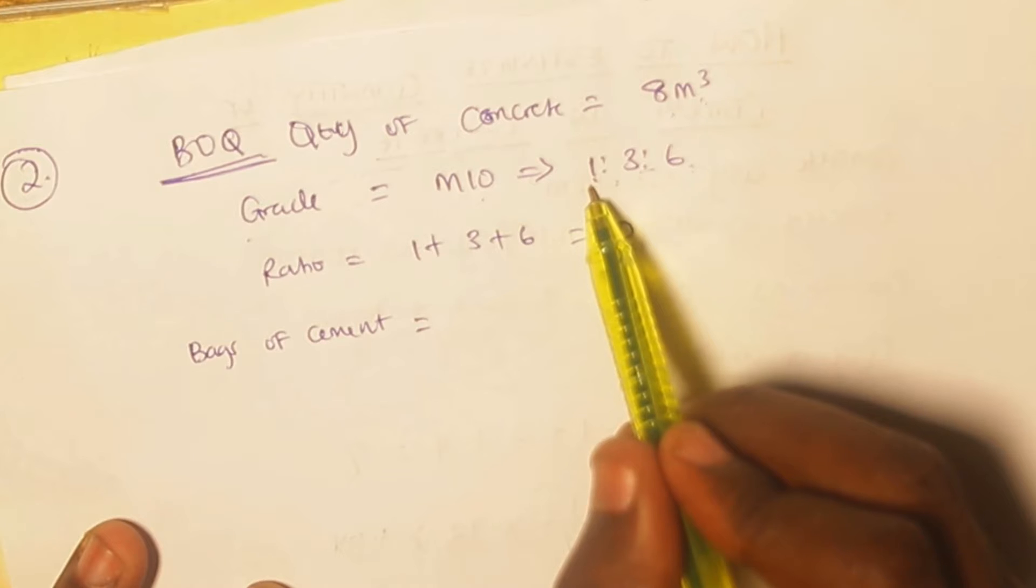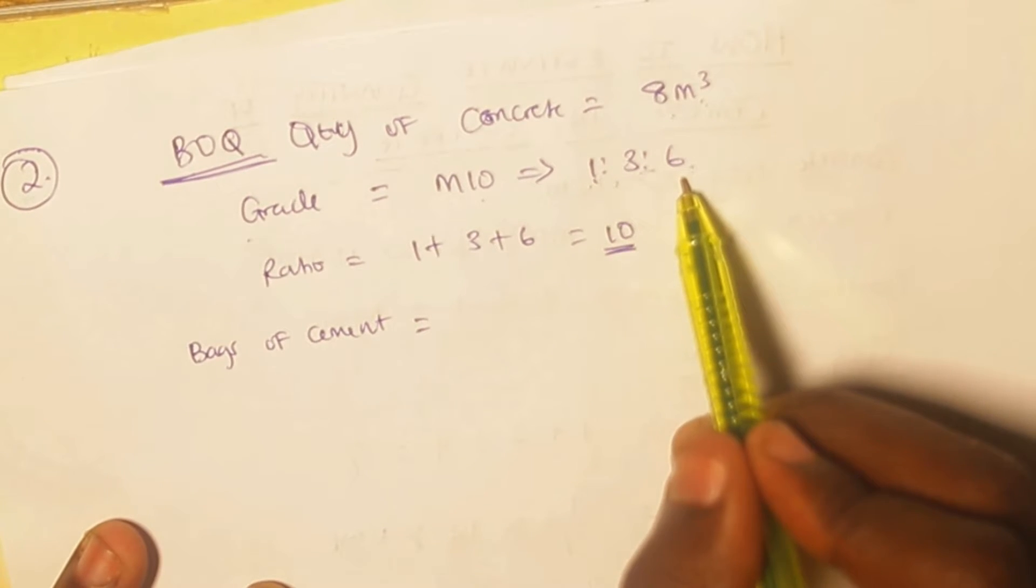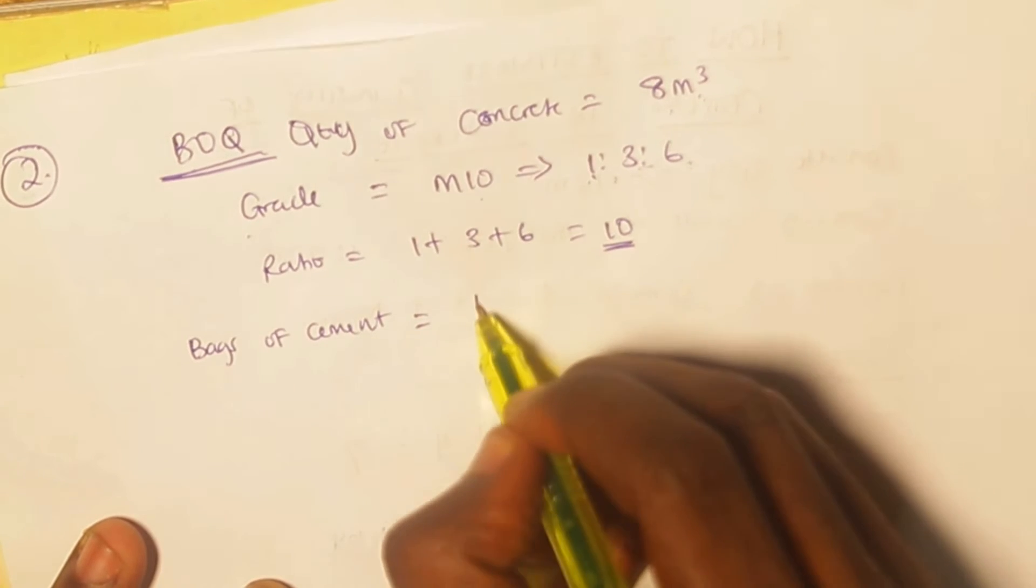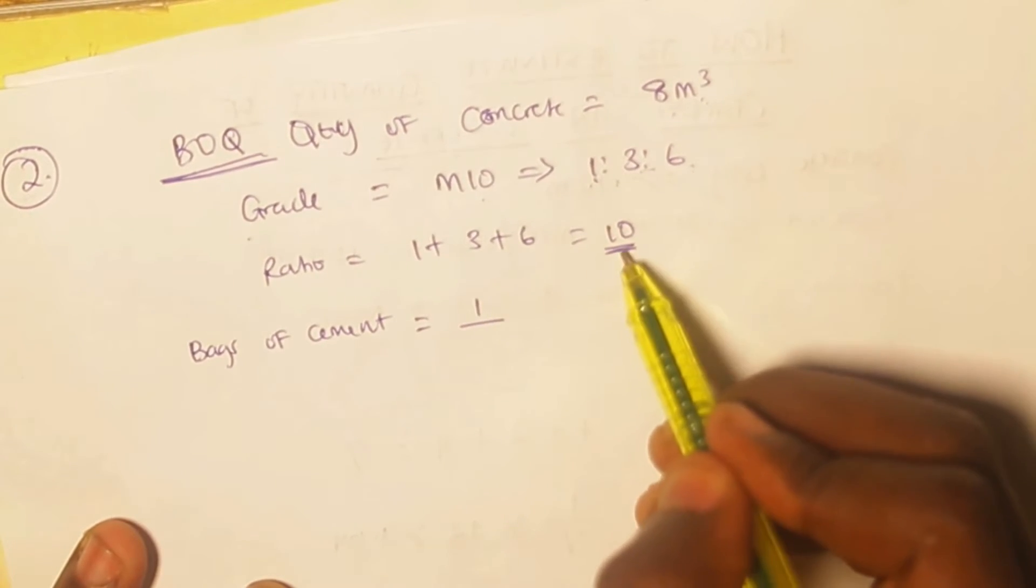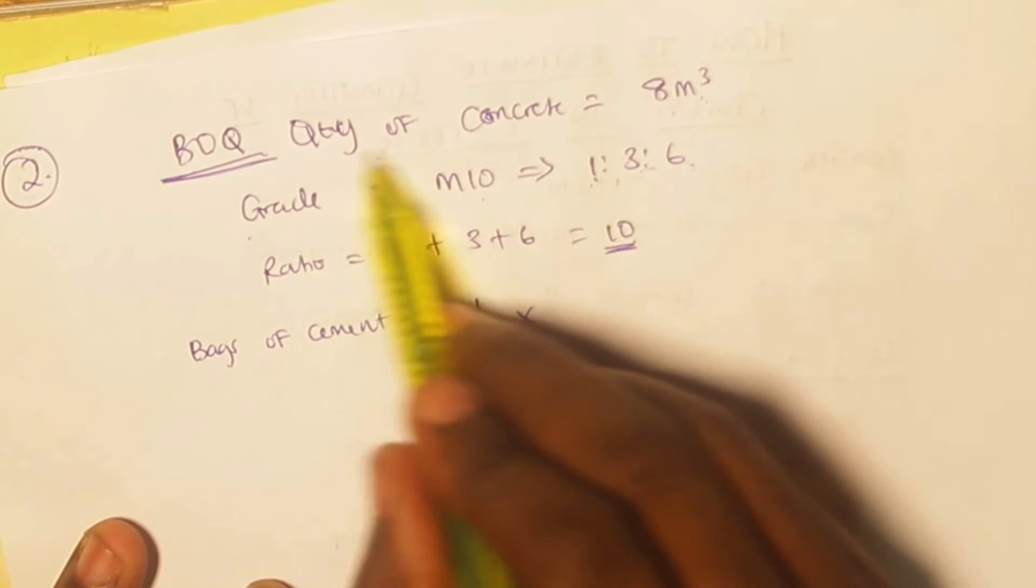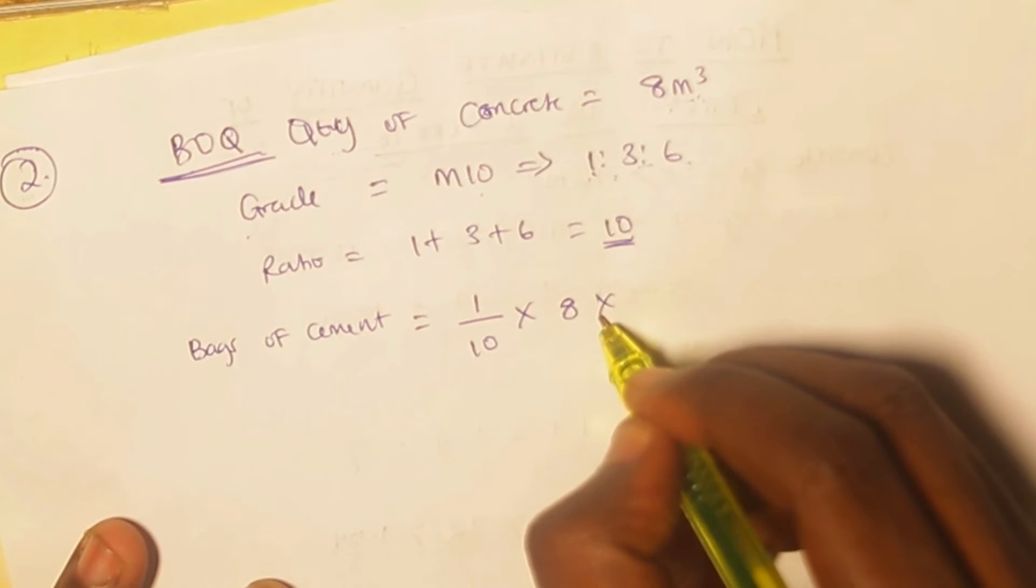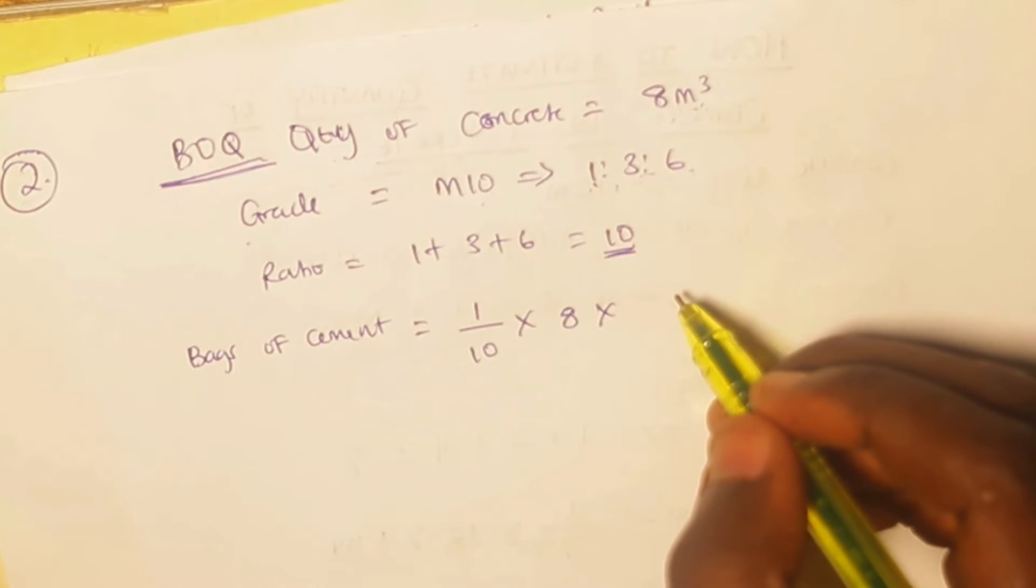So I can just say bags of cement in this case is going to be equal to - now this is one ratio three ratio six, so it means one represents cement, three represents sand, and six represents aggregate. So I'm going to say one over the total ratio, which is 10, multiplied by the quantity of concrete.